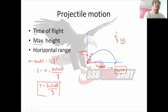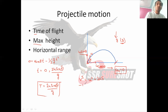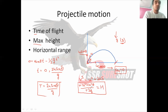For maximum height, the condition is that the final velocity must be zero. We use the third equation of motion: v² = u² + 2as. Substituting v = 0 and initial velocity in the vertical direction as u sinθ: 0 = u² sin²θ − 2gH. From here, the maximum height H = u² sin²θ / 2g.